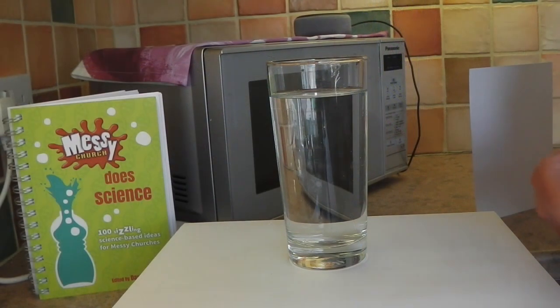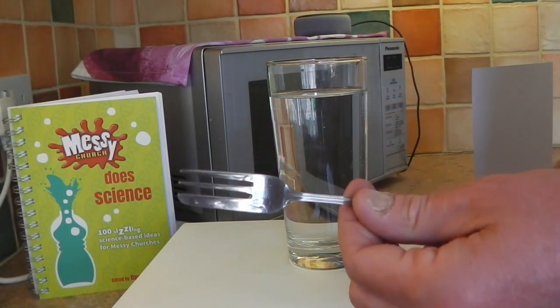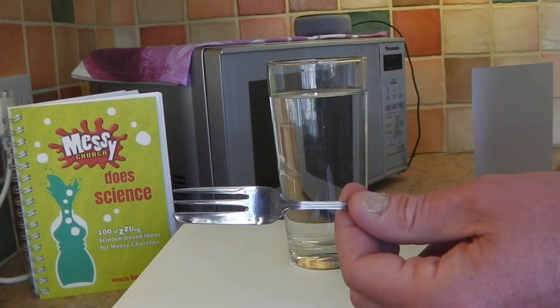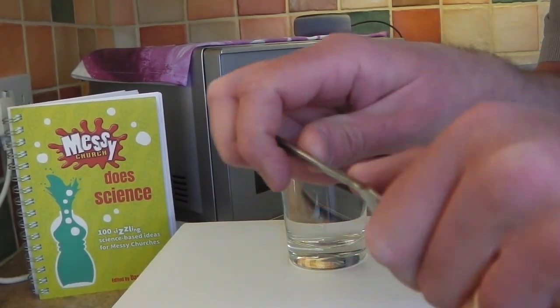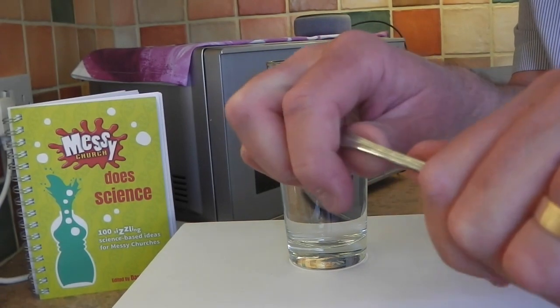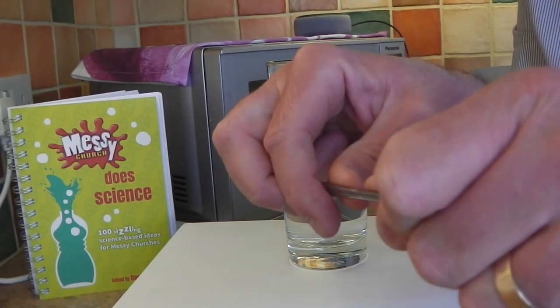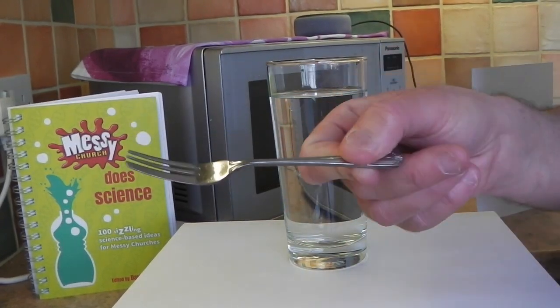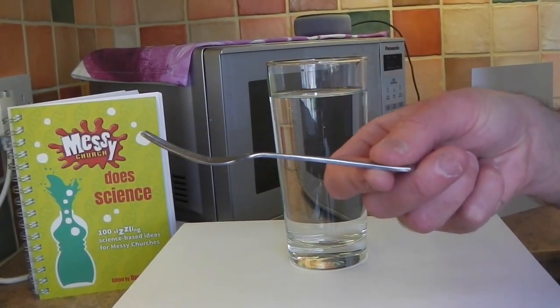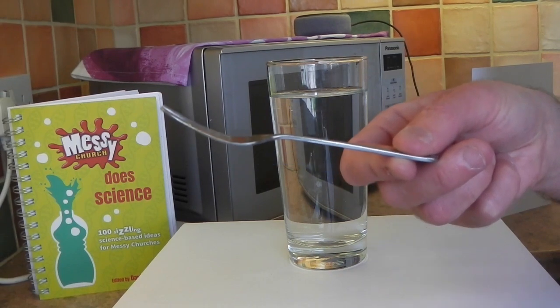So for our next experiment, we need the glass of water and we need the little fork or spoon that you've got. It's pretty strong, this fork. I suppose I could bend it, but it'd be very hard to break in two. But I'm going to see if I can break this fork in two just by using this water.